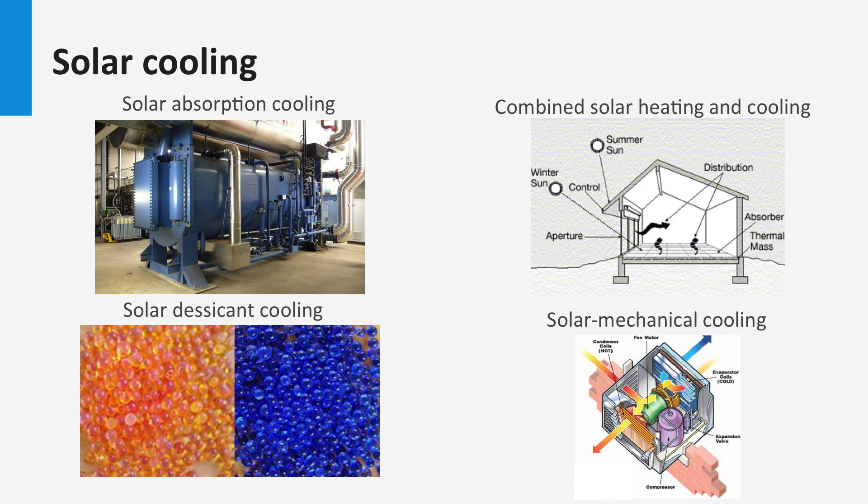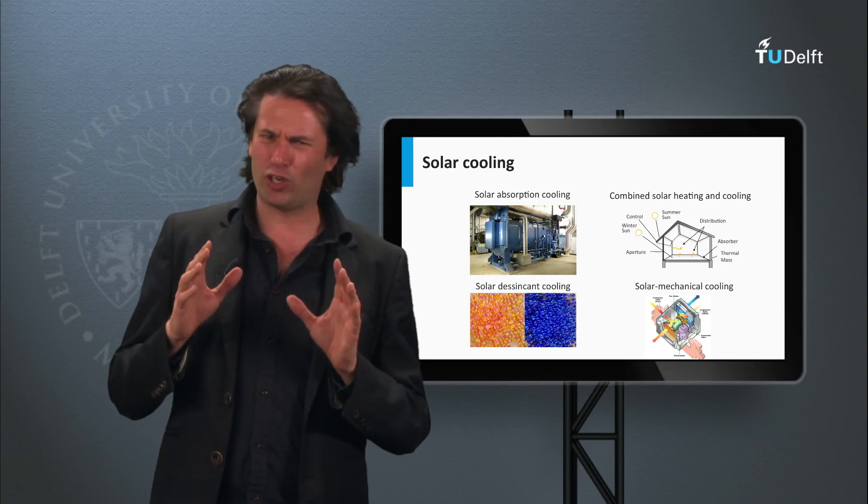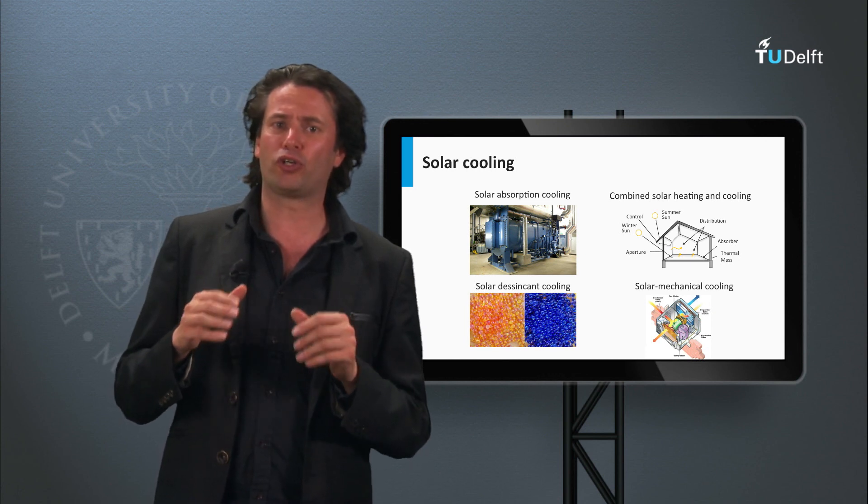Finally, a solar mechanical cooling system combines a solar powered Rankine cycle engine with a conventional air conditioning system. The engine is powered by the heat in the storage tank.